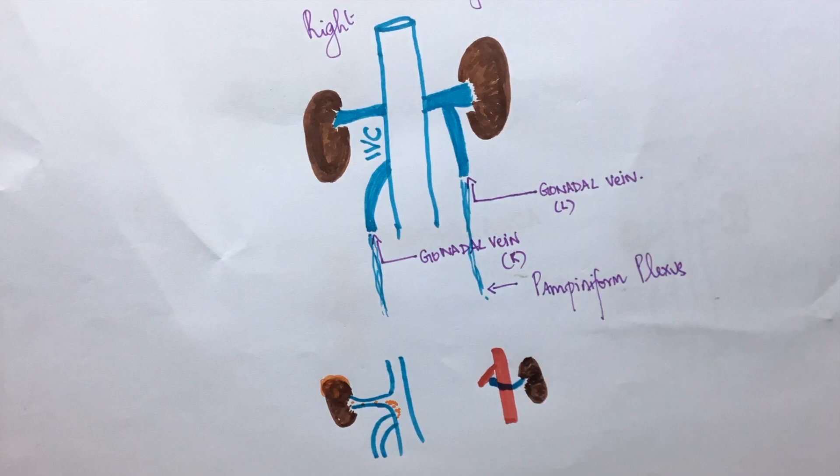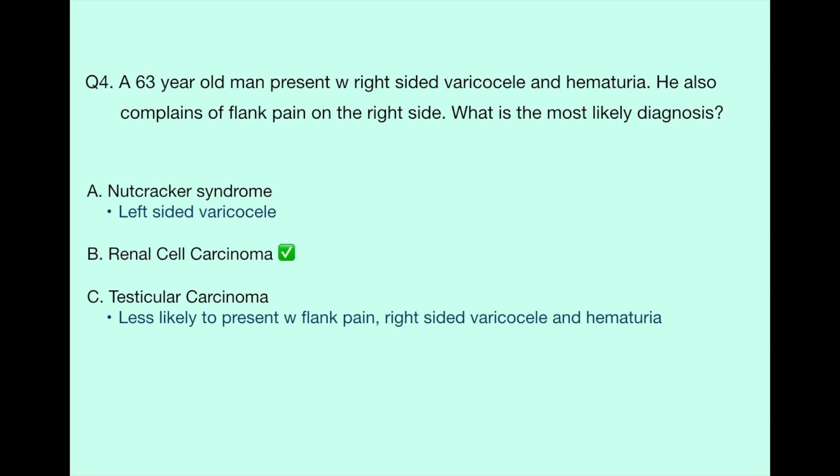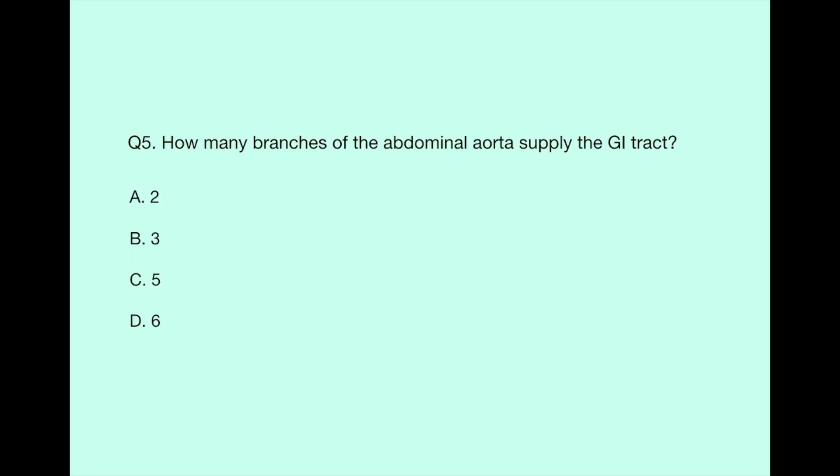Nutcracker syndrome presents with similar symptoms but left-sided varicocele. This is because it is the left renal vein that is compressed between the superior mesenteric artery and the abdominal aorta.